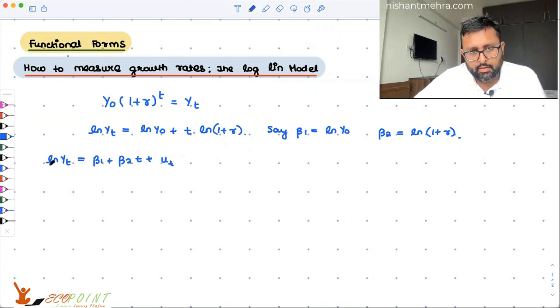This is what my log y is. So beta 2, wherever log is there and we want to find out the changes, that is a relative change. Wherever there is no log, it is the absolute change. So beta 2 is telling me the relative change in y due to the absolute change in x.